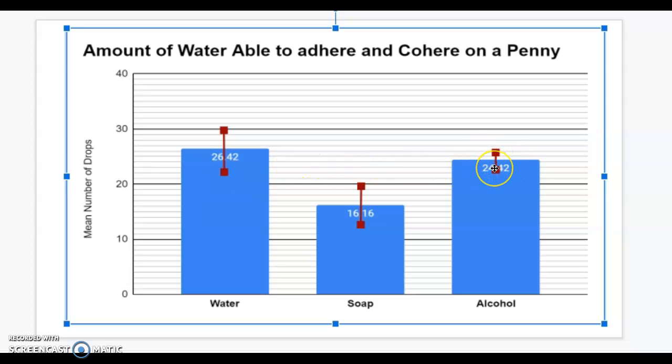Now, you'll notice that the spread for alcohol is much smaller. And if you go look at the data for alcohol, you're going to see that the number of drops students got on their penny were much closer together. There wasn't so much of a spread as there was in the high and low ends of the data. So, we trust this average more because the results were more consistent.